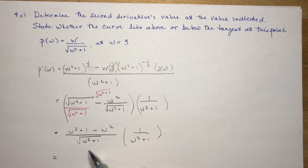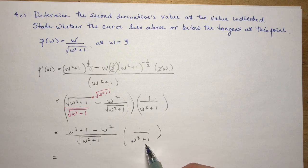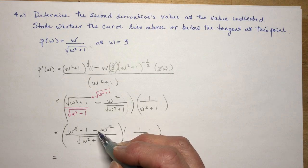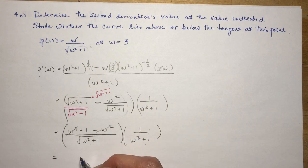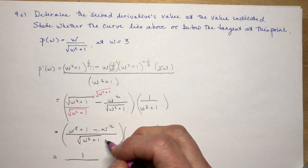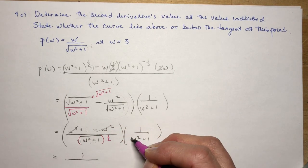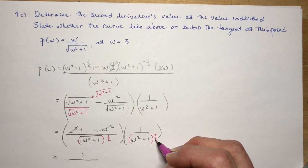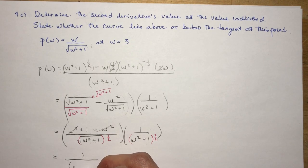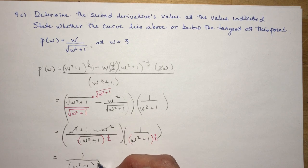This w² + 1 cancels with this one. I have one over this times one over this. These cancel out and I'm left with one times one equals one. In the denominator I have (w² + 1) to the half power, times (w² + 1) to the one power — adding the exponents gives me (w² + 1) to the three-halves. So p'(w) = 1/(w² + 1)^(3/2).